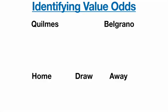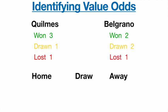We're looking at how many times each team won, drew, or lost — home for the home team, away for the away team — in their last five games. We then add them together: home wins plus away losses give us the 'home win' total, since an away loss means the home team won. So three home wins plus one away loss equals four. The draws are simply added together, and losses combine two away wins plus one home loss to give three.